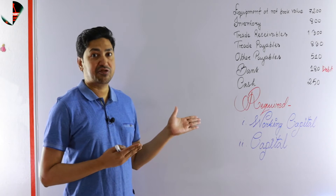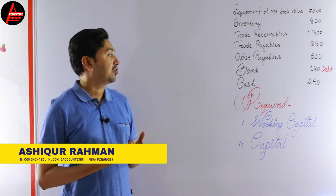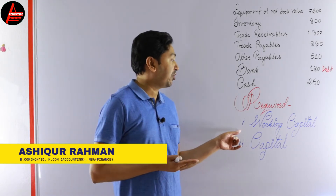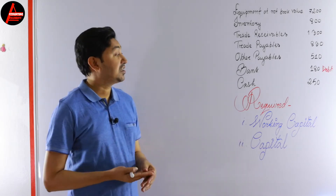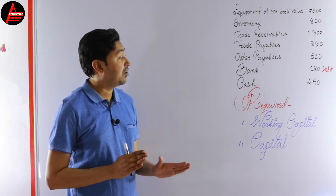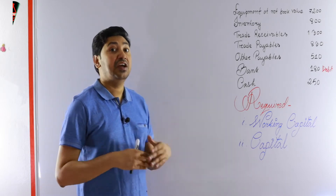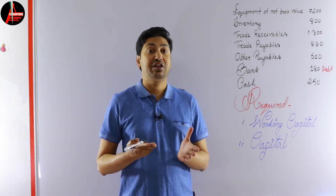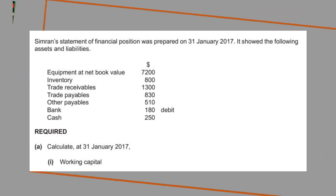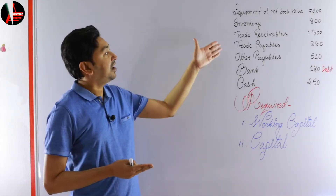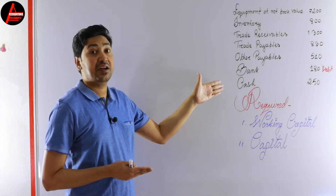Here is the question. I'll explain how to calculate these two requirements: the first one is working capital and the second one is capital. For this lesson, I'll show you how to calculate working capital. The question: student Shimran's statement of financial position was prepared on 31st January 2017, showing the following assets and liabilities.